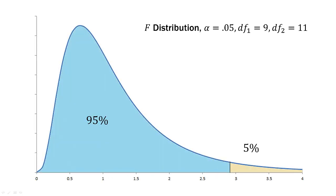So here is our F distribution. We're gonna use an alpha of 0.05. Remember, our degrees of freedom one is nine. That's the numerator. And degrees of freedom two is 11. That's the denominator. So here is that distribution.